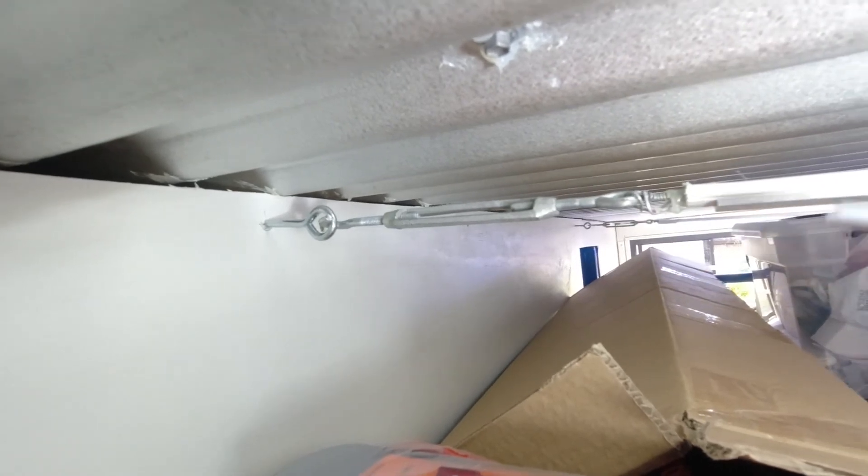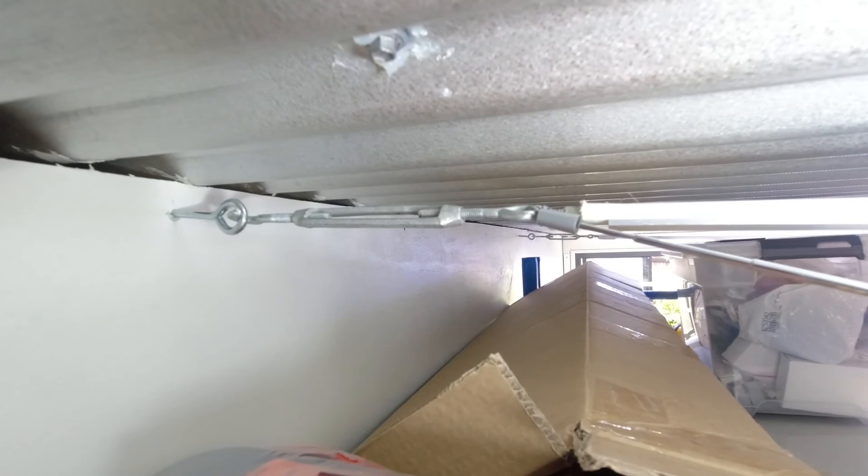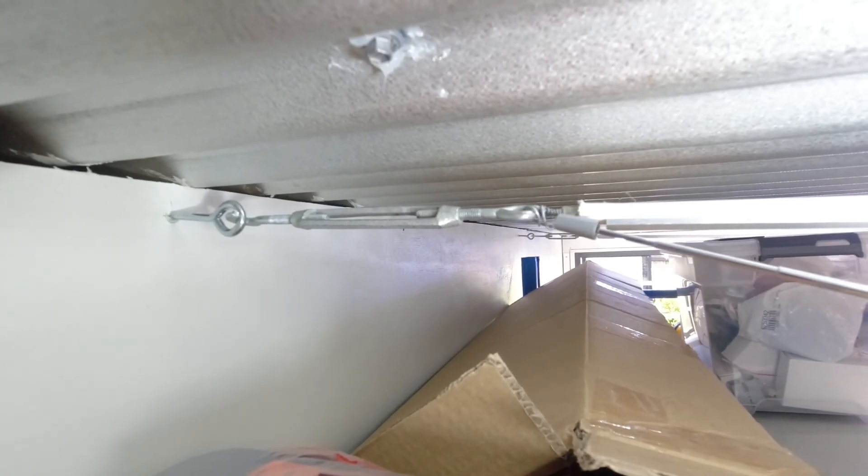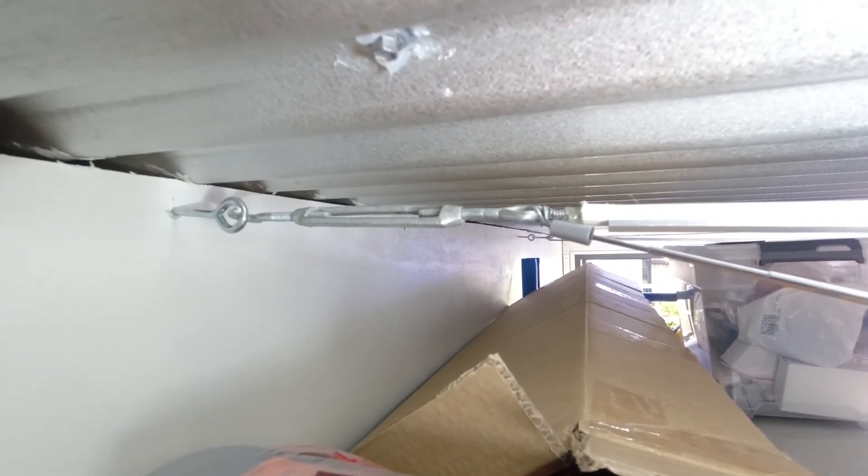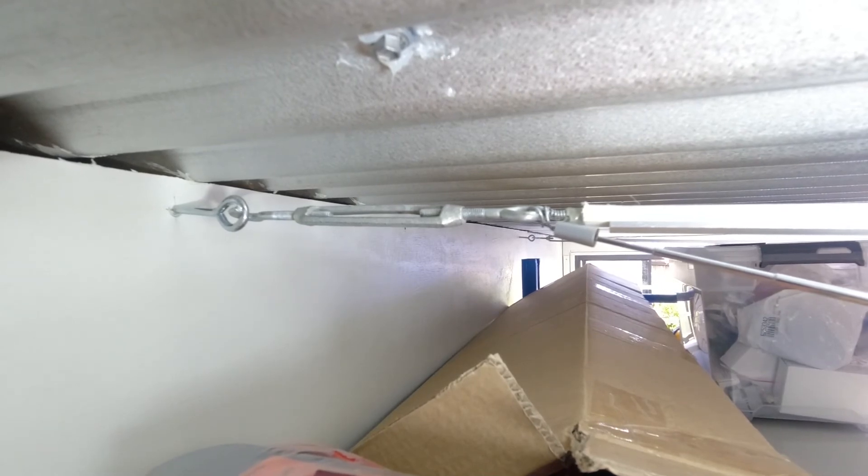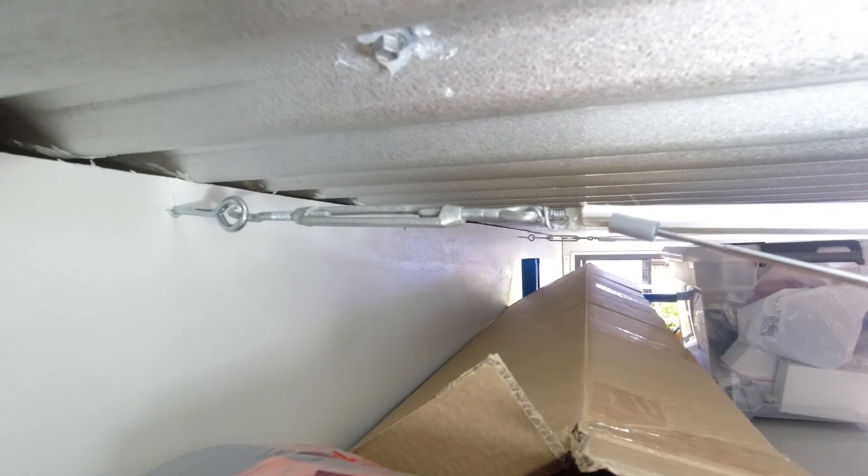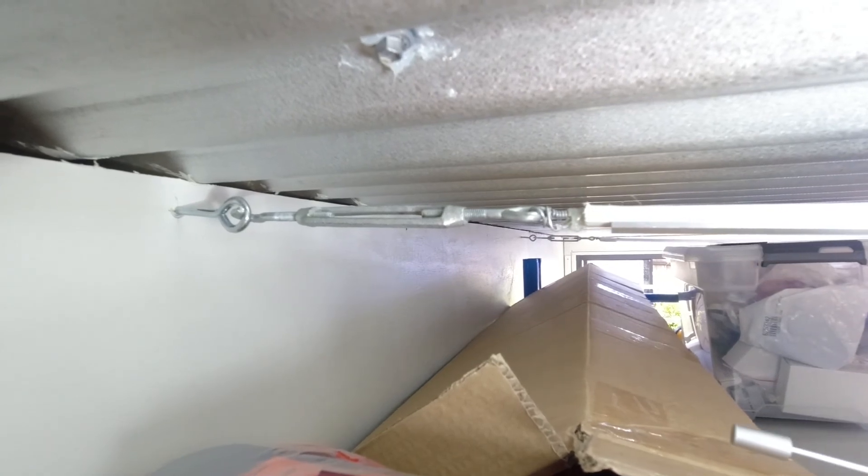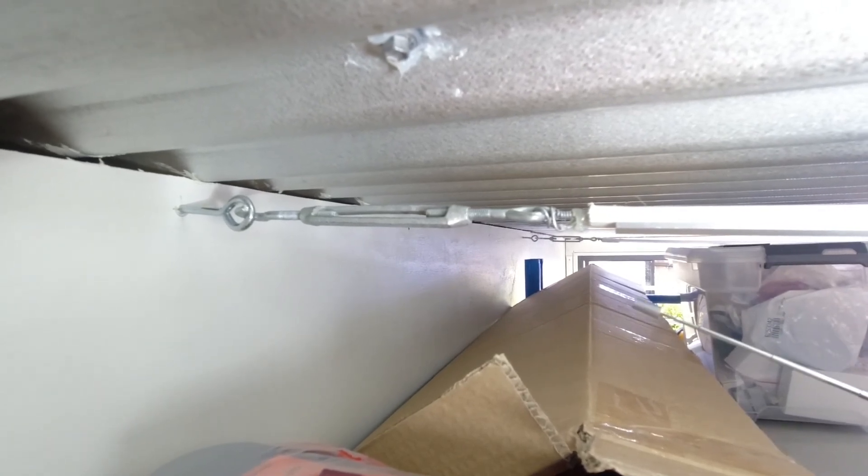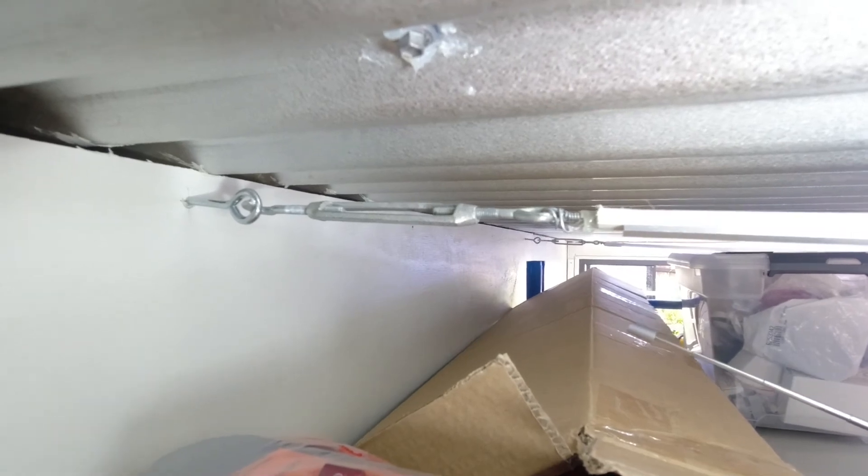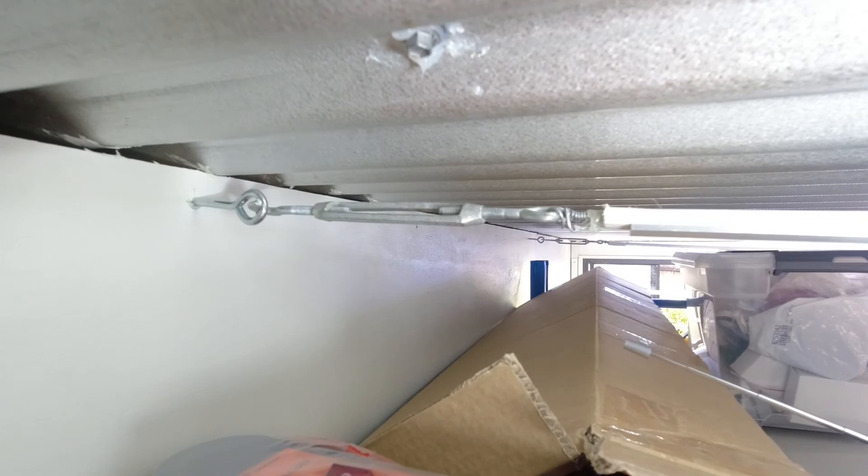Then I use this tensioner and tied to the end is I think it's 1.2 millimeter diameter tie wire, steel tie wire, which I then pull and stretch across to the opposite wall. And on the opposite wall similarly there is a steel eyelet screwed into the 12mm plywood.